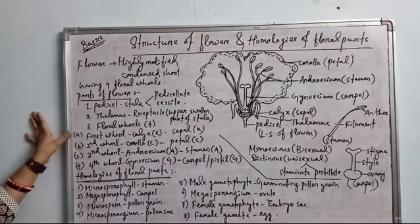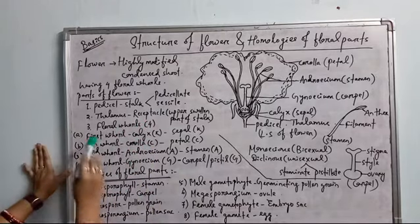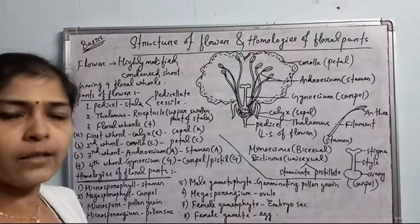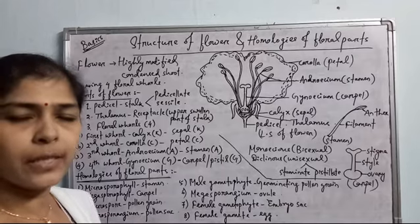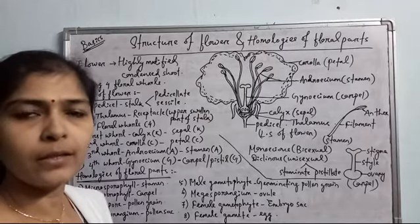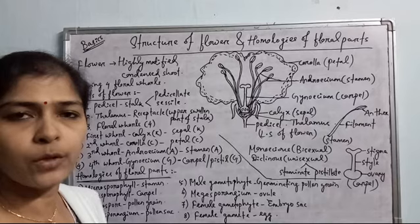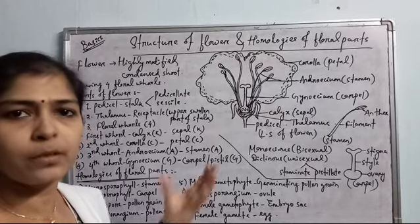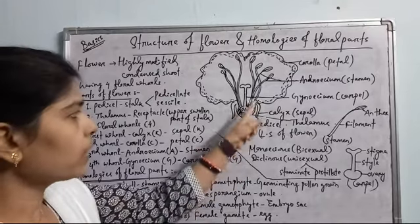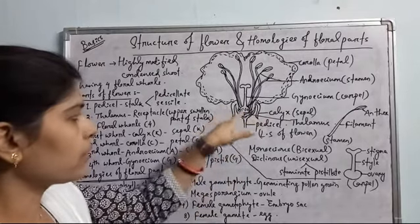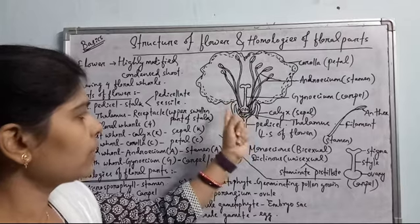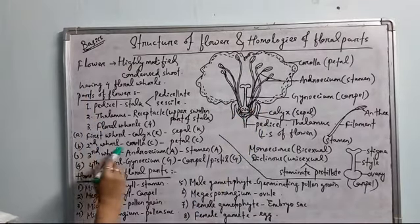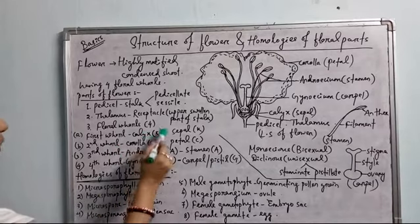The third part is the floral whorls. There are four different types of floral whorls. The first whorl is the calyx. Calyx consists of green sepals — the individual unit of calyx is a sepal. They appear green like leaves and are small in structure. In most complete flowers, these sepals are present toward the base, surrounding the receptacle.